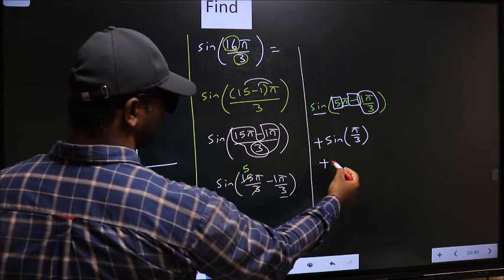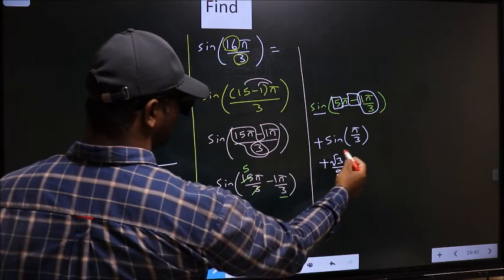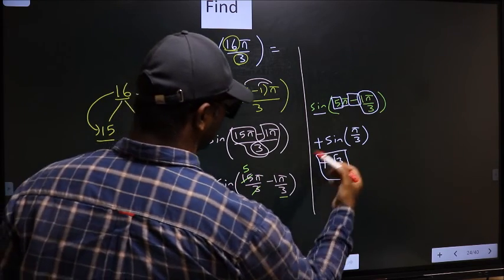So plus sin π by 3 is root 3 by 2. So this is our answer.